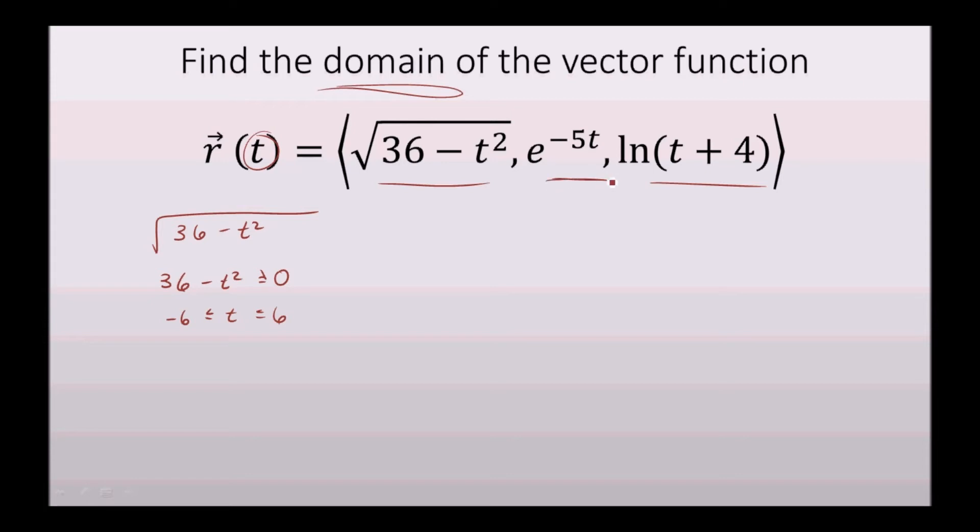Moving on to the second component, e to the negative 5t, t here has no restrictions whatsoever. So t can be anything, but we've already been limited between negative 6 and 6, so t will exist in that range, but with an exponential function, t can equal any value.